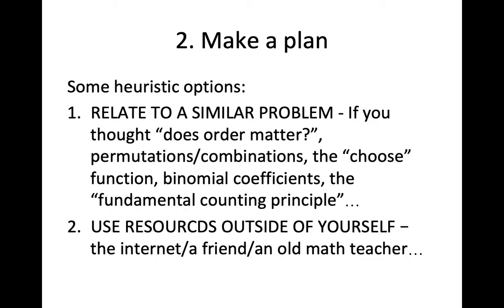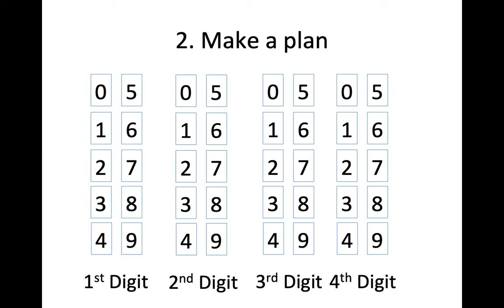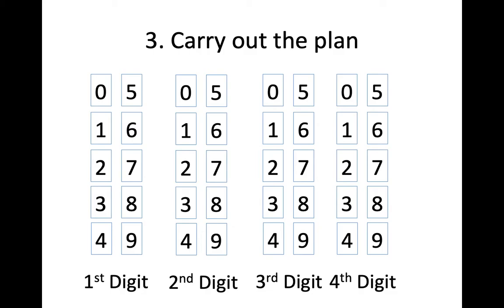The heuristic I'm going to use is actually using manipulatives. I've got my setup here — all the digits 0 through 9 and the four spots of the lock. Look at this first spot: I've got 10 different numbers I can pick for there. I can pick 0, 1, 2, 3, 4, 5, 6, 7, 8, or 9. That's 10 different things.